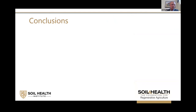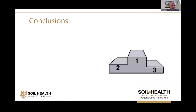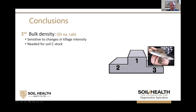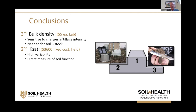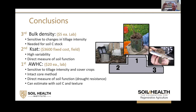In conclusion, if I had to rank these measurements: in third place is bulk density — it's cheap, sensitive to tillage, and needed to calculate soil carbon stock, but it's not a direct measure of soil function. In second place is KSAT — a great measurement with a lot of potential, especially if you have time for multiple measurements per plot, but it has high variability. It is a direct measure of soil function. And the winner is available water holding capacity using the intact core method — it's a direct measure of soil function and the most sensitive to management changes.